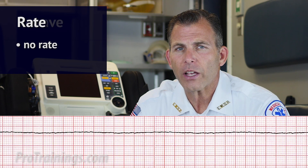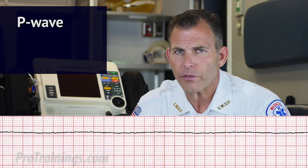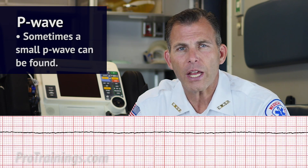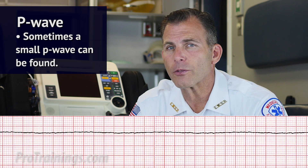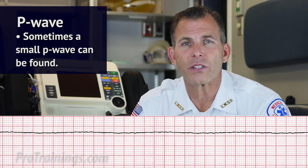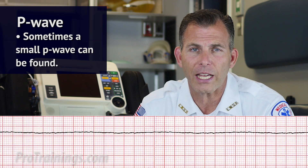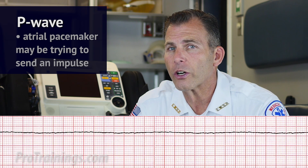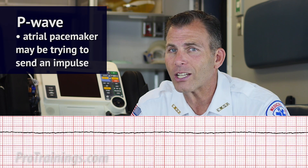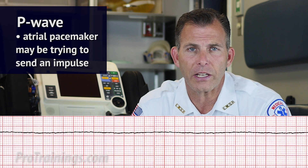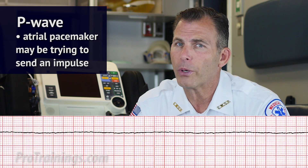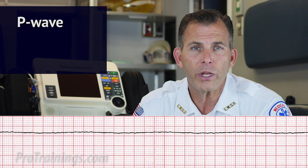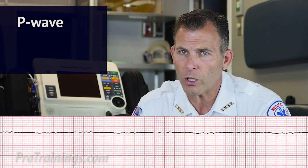Next we evaluate the P wave. Are they present? In some cases a small P wave can sometimes be seen but it is not followed by any other waveforms. This can mean that in rare cases the atrial pacemaker may be trying to send an impulse but has no ventricular reaction. No other P wave findings will apply.